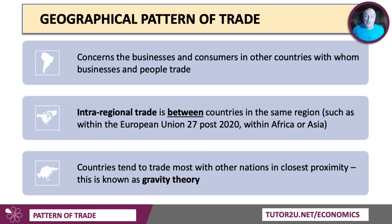We make a distinction between the geographical pattern of trade — basically with whom we trade. One concept here is intra-regional trade: trade between countries in the same region, such as within the member nations of the European Union, or within Africa or Asia. Theory tends to suggest that countries nearly always trade most with nations in close proximity — you might want to look at something called the gravity theory of trade. You can trade with any country in the world, but the closer you are, the lower the transaction costs and the food miles.